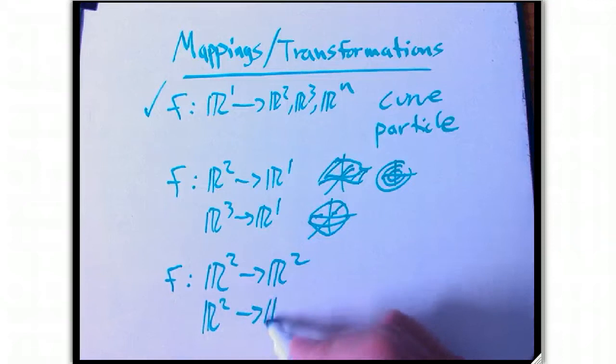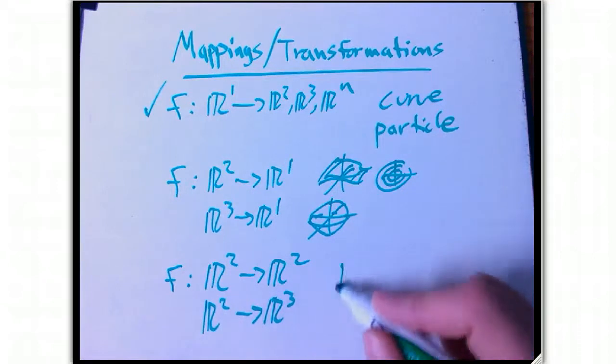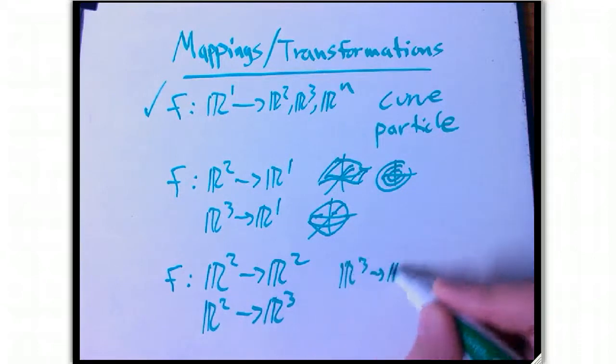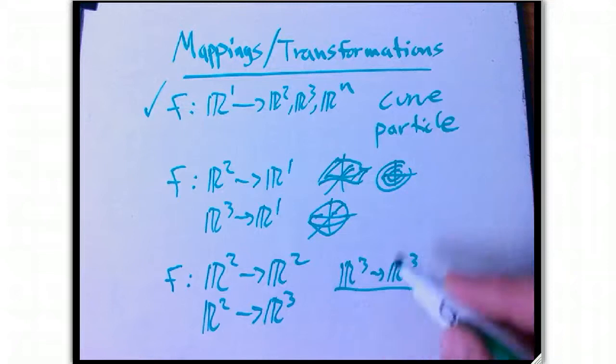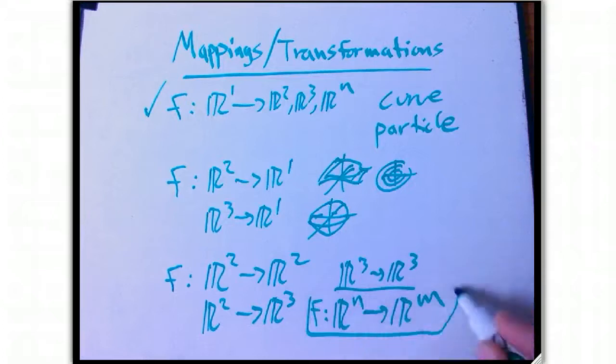Something R2 to R3, taking a plane and kind of hopefully curving it in an interesting way and putting it inside of space, that'll create what's called a parameterized surface. Or maybe R3 to R3, that could be like a transformation of space. Or maybe a different coordinate system on space. Or even in general, Rn to Rm. We'd really like to at least touch on the general case. What happens there?